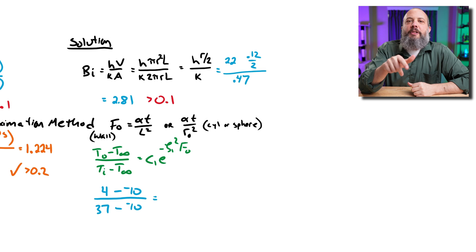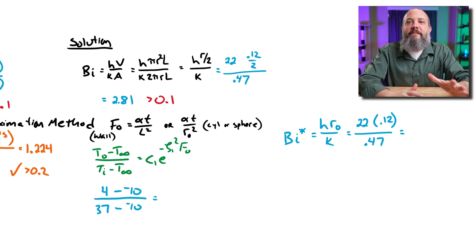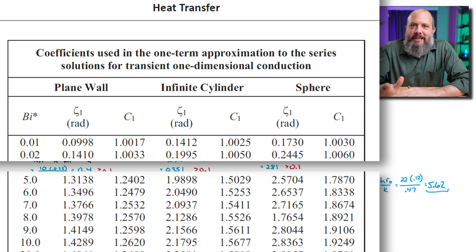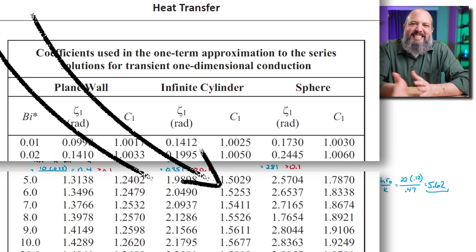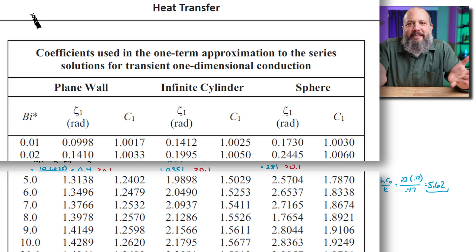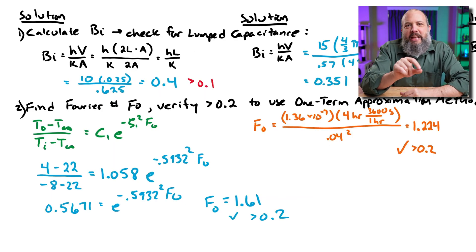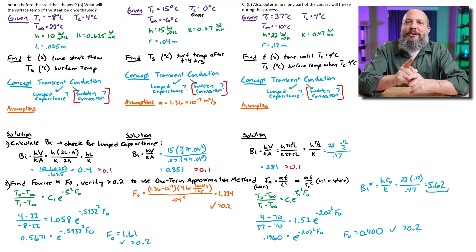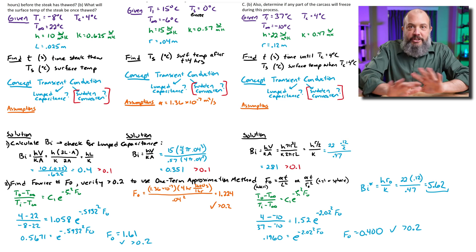For the cylinder, I need to calculate a new Biot number using radius instead of volume over area — this new Biot number is twice as big at 5.6. Eyeballing the table between the 5 and 6 rows, I choose ζ = 2.02 and C = 1.52. After some calculator work using natural log to eliminate the exponential terms, I get a Fourier number of 1.6 for the steak and 0.4 for the hot dog cylinder — both greater than 0.2, which justifies the one-term approximation method.